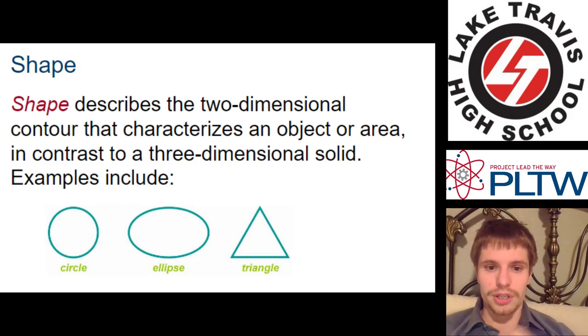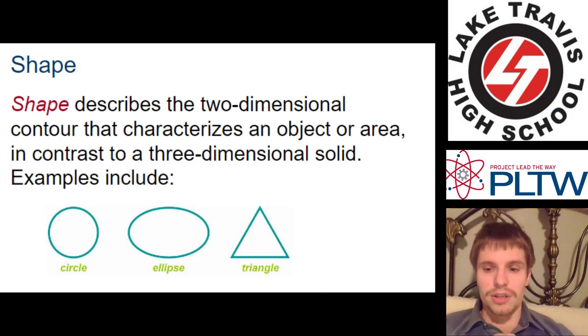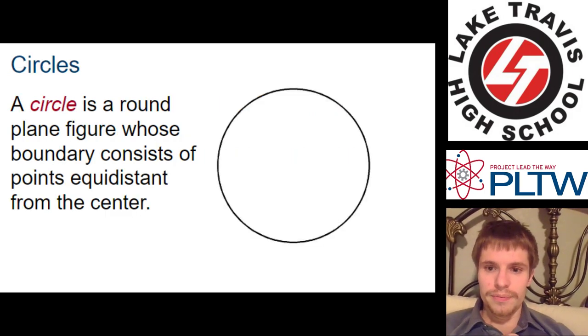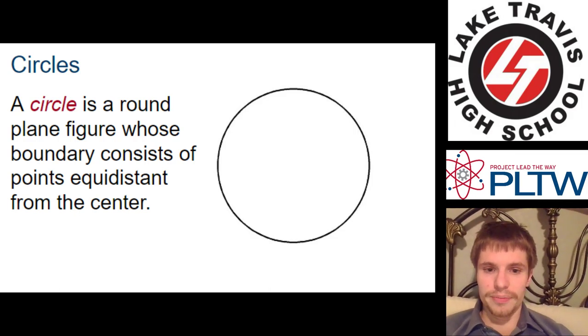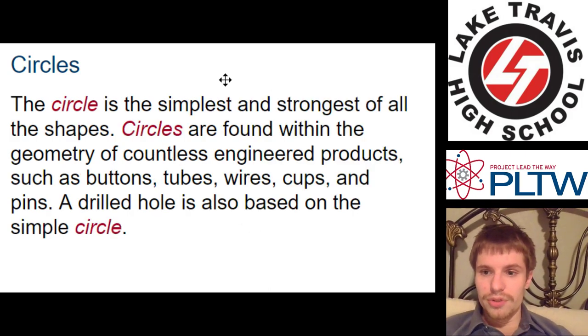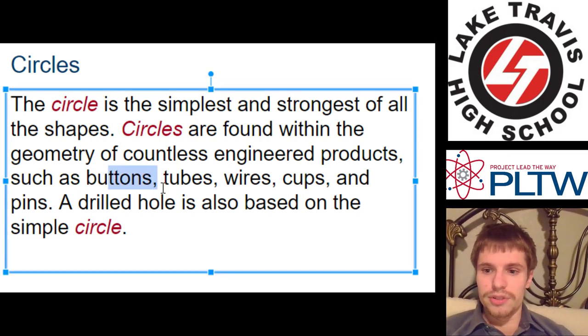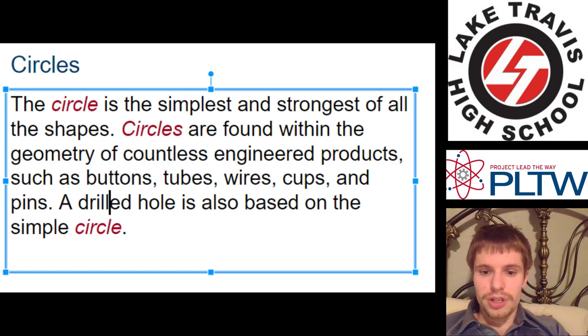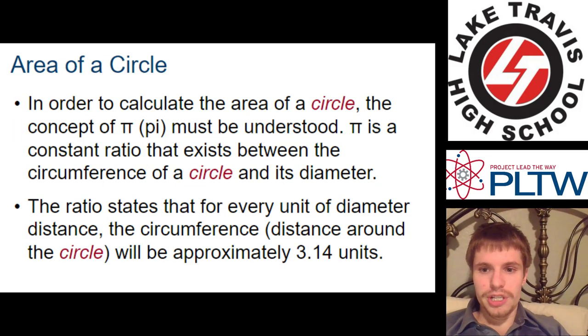Two-dimensional contours that cover a surface that are closed. Area, everything inside that enclosed surface. A circle is every point equidistant from the center. Circles are used in engineering a lot. They're very strong. Used in buttons, etc. Drilled holes can also be circles. But they're simple and very strong. So we really like them in engineering.